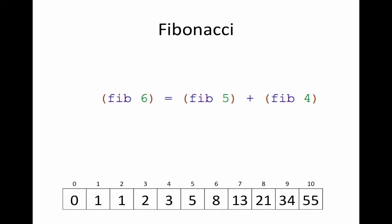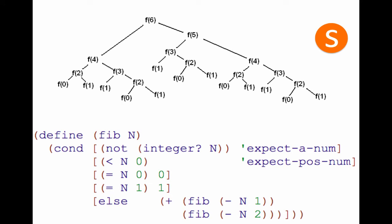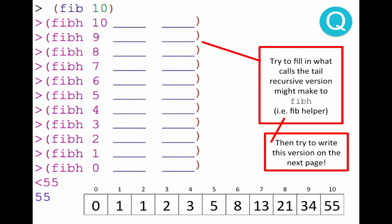Otherwise, I'm going to add together a Fib call of one minus the input and a Fib call with two minus the input. I've got that code here. And you can see for even Fibonacci of six, I make a lot of recursive calls.